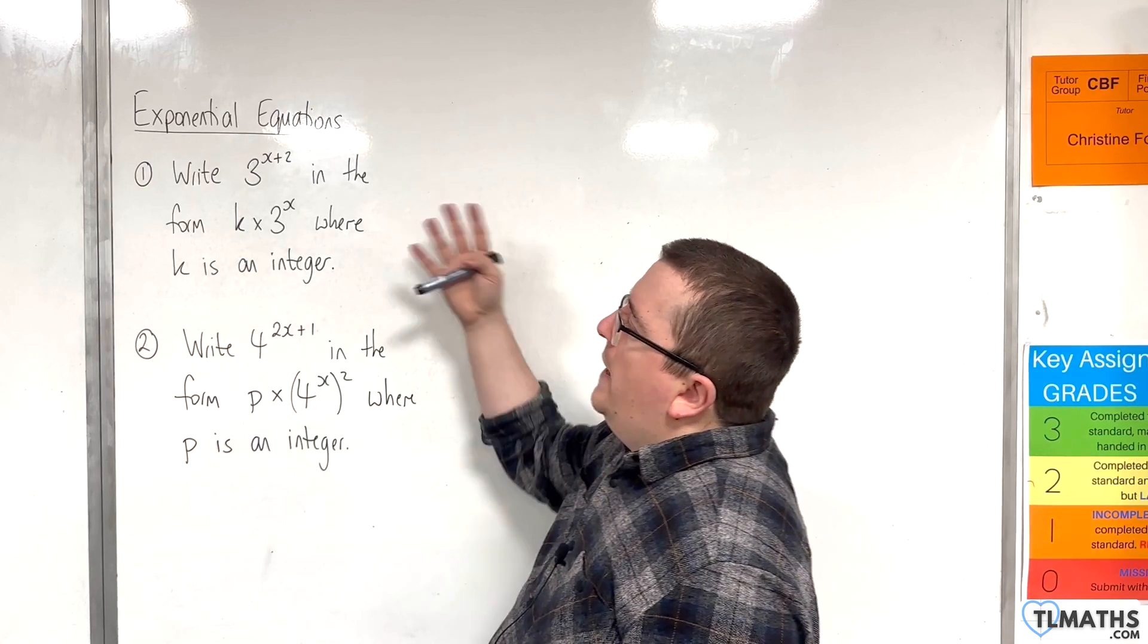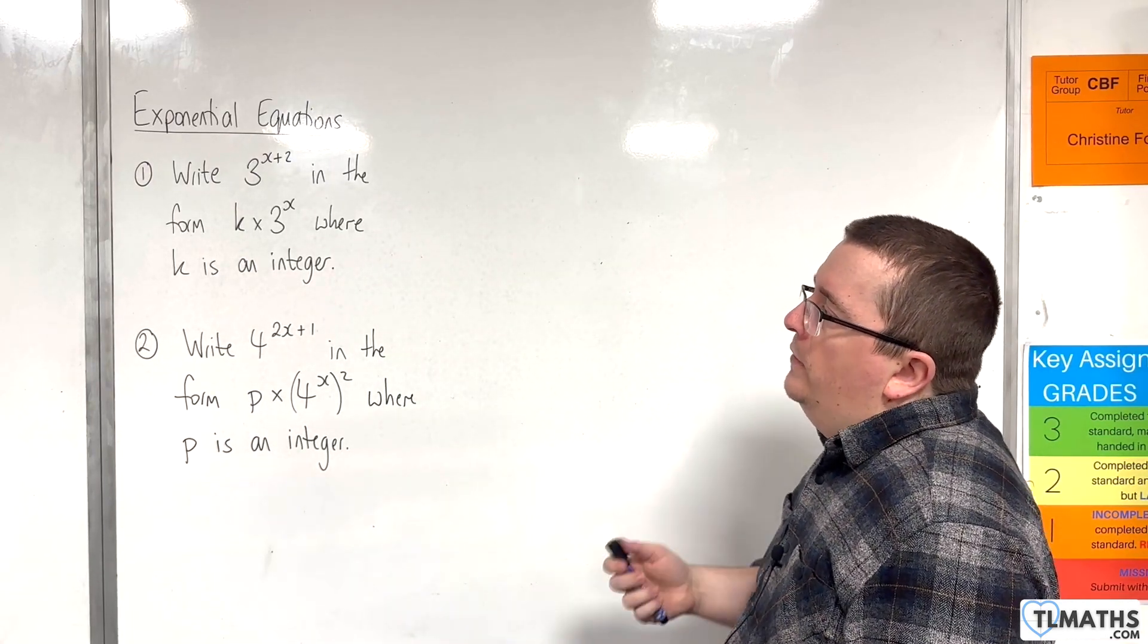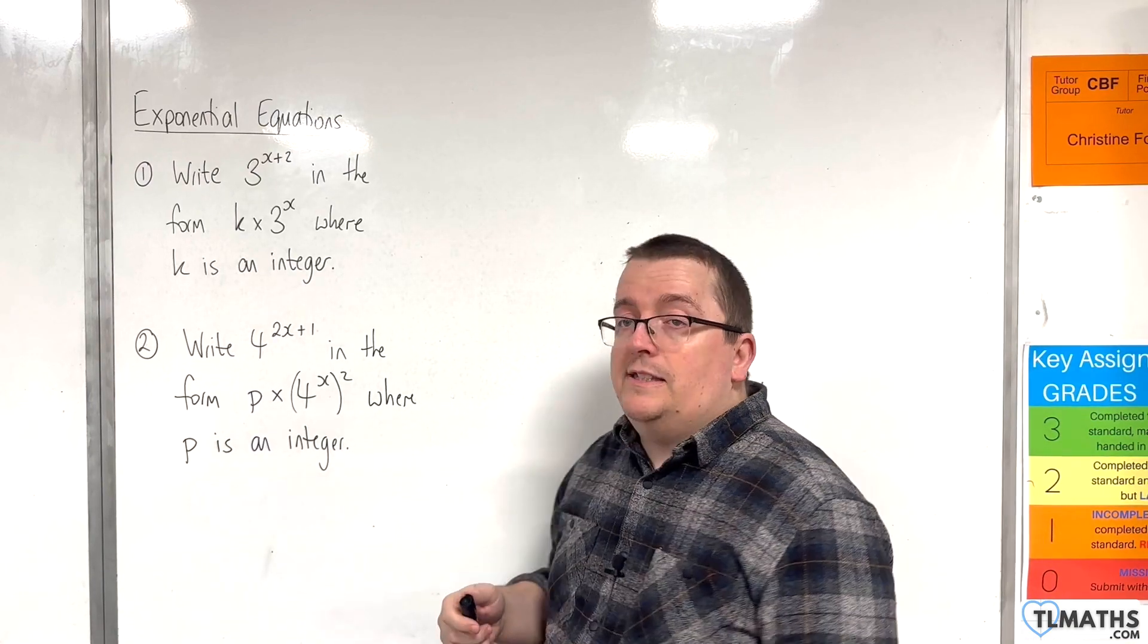So the first one here, write 3 to the power of x plus 2 in the form k times 3 to the x, where k is an integer.